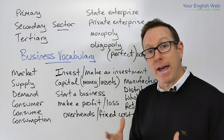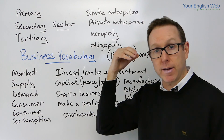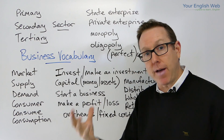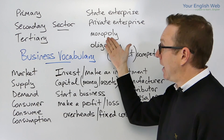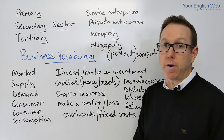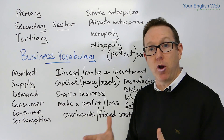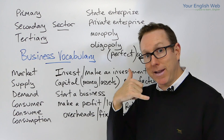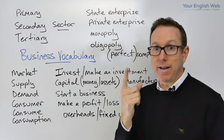Qantas was a state enterprise, then it became a private enterprise. State enterprises are normally considered monopolies. For example, Telstra in Australia was a monopoly — it controlled the whole market. If you wanted to make a phone call, you had to do it with one company.